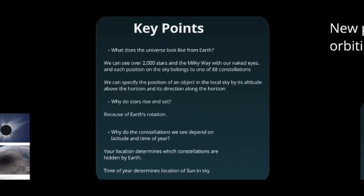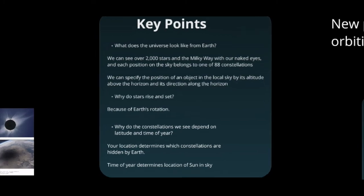For this chapter, there are some key points to remember. We first covered what does the universe look like from Earth. We can see 2,000 stars. The stars rise in the east and set in the west due to the rotation of the Earth. The constellations that you can see depend on your latitude, but not on your longitude. And your location determines which of the constellations are hidden by Earth.